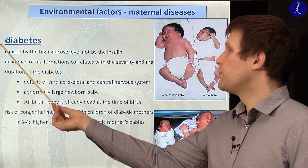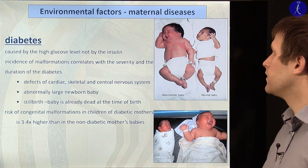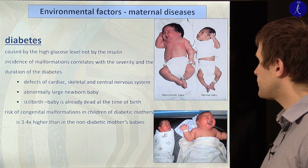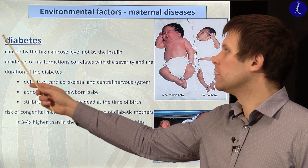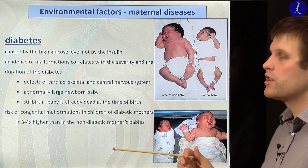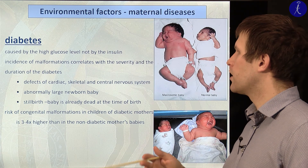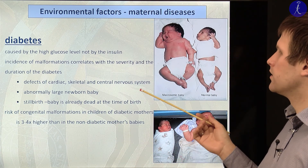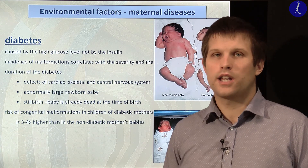Maternal diseases such as diabetes are also important. If the baby is born from a non-treated diabetic mother, the babies are very large — around 4000 grams. Diabetic effects can result in cardiac, skeletal, and nervous system problems. Children of diabetic mothers also show chronic diseases much earlier and more frequently than other babies.